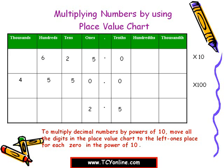Next we have 2.5 — let's multiply this by 1000. Move each digit three places to the left: 2 at ones moves to thousands, and 5 at tenths moves to hundreds. Place zeros at tens, ones, and tenths places, so we get the answer 2500. Always remember: while multiplying any decimal number by a power of 10, move all the digits in the place value chart to the left, one place for each zero in the power of 10.